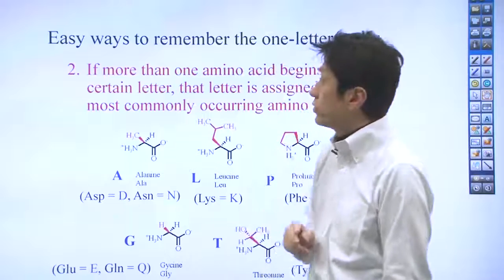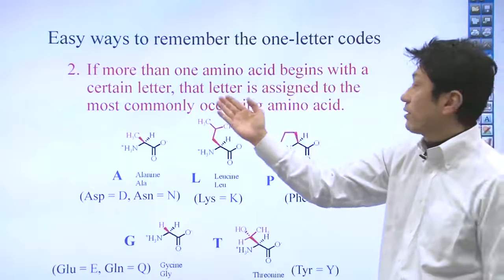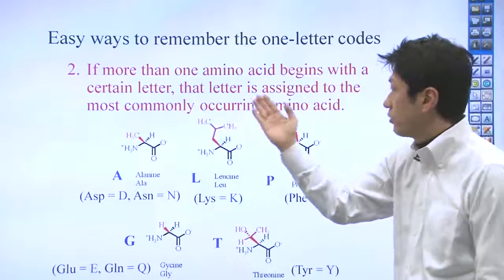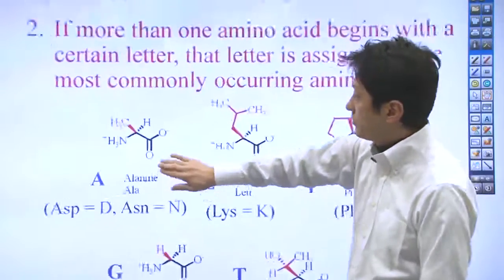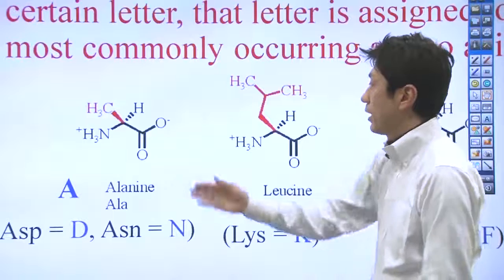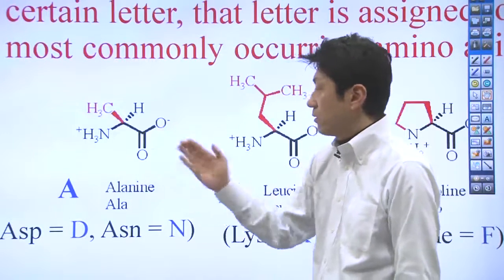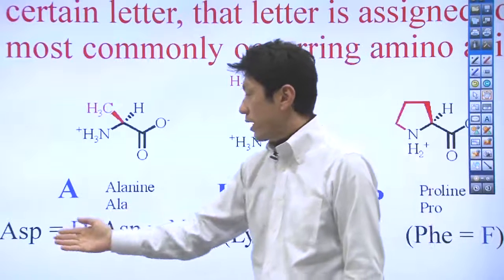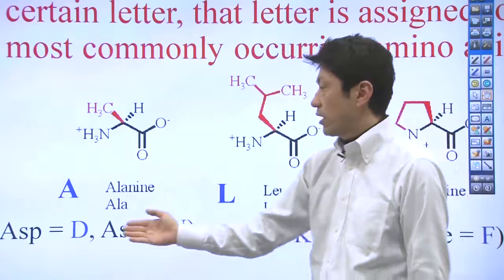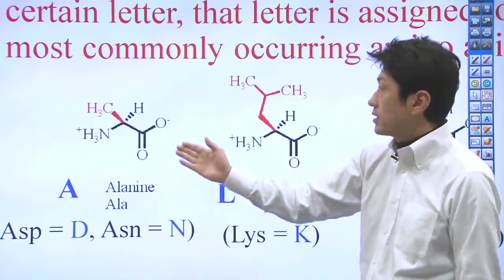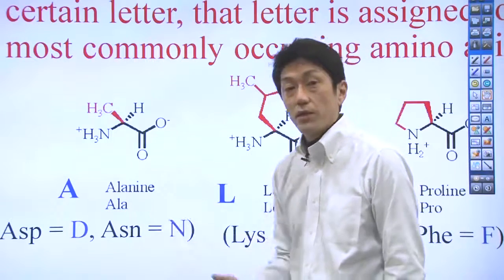Number two. If more than one amino acid begins with a certain letter, that letter is assigned to the most commonly occurring amino acid. Here's alanine. Alanine starts with A. That's why it is A. But actually, aspartic acid and asparagine start with A. But they are not A, because alanine is the most abundant among these three amino acids.